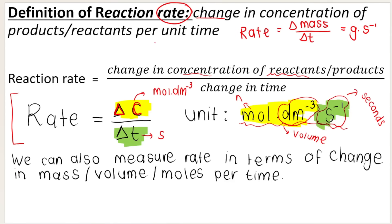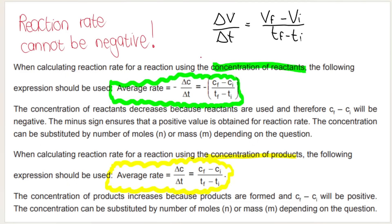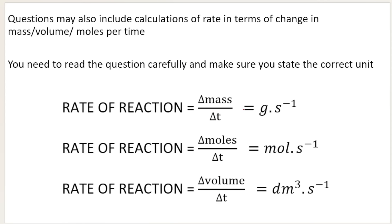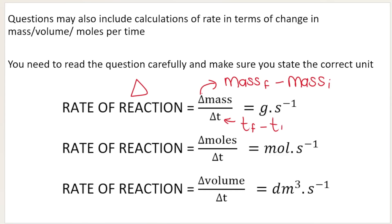According to the definition, rate is the change in concentration of reactants or products per unit time — take note of that unit. Remember, reaction rate cannot be negative, so if you're using reactants there must be a minus in front. If you're using products, no minus needed. Something people often forget: change — the delta symbol — means final minus initial. So change in mass is mass final minus mass initial, and change in time is time final minus time initial.